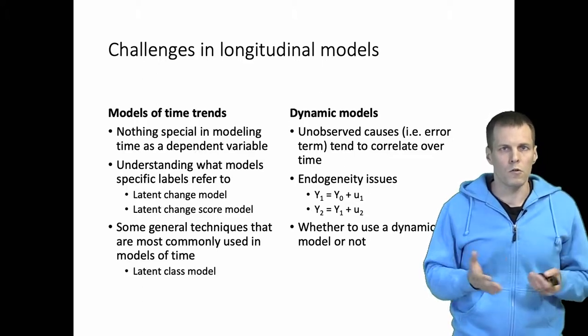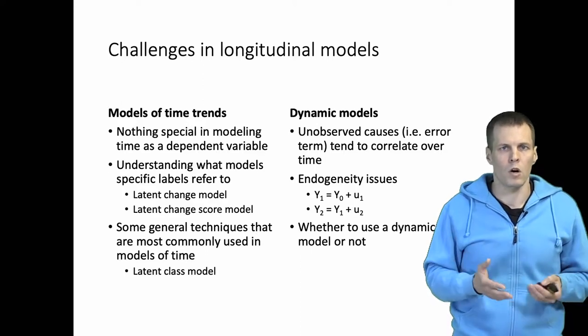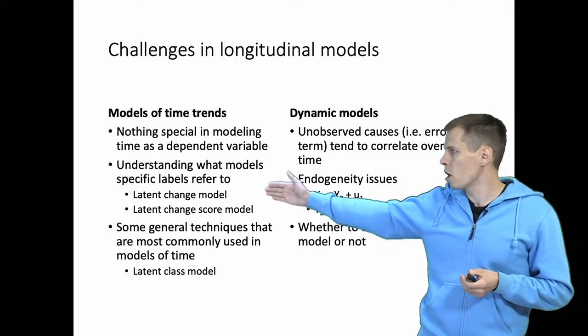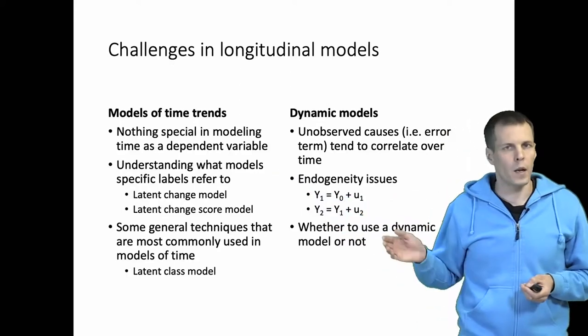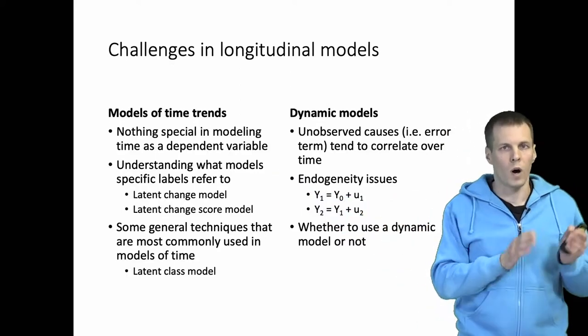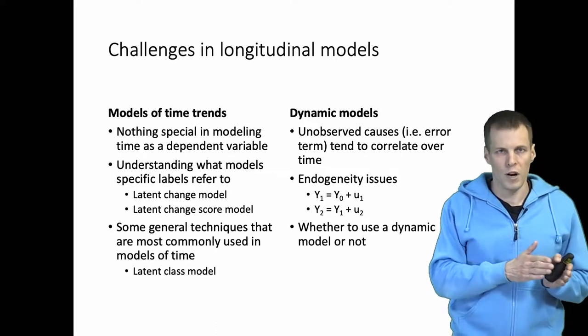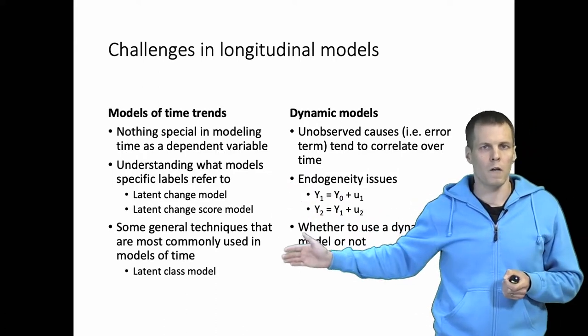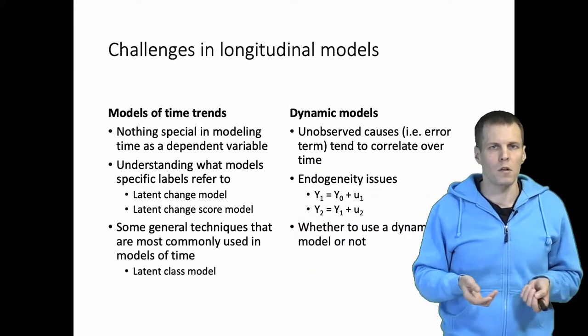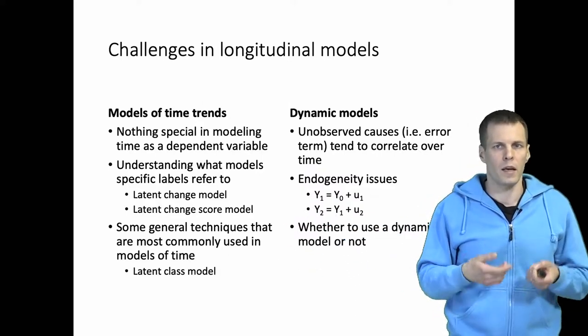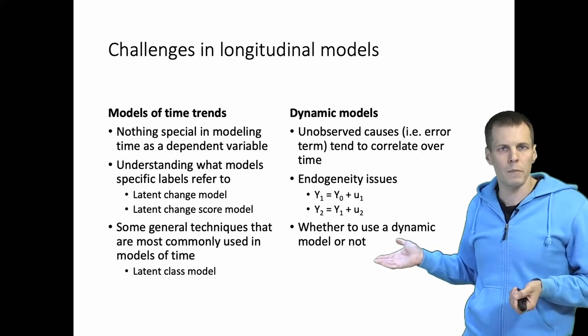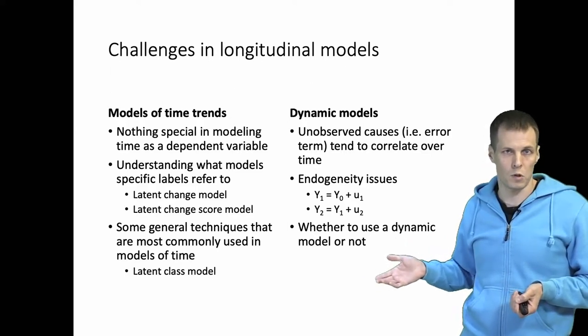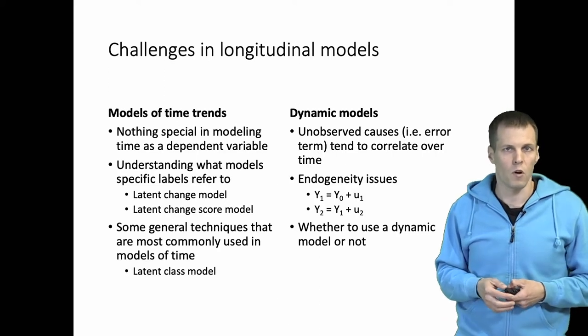So to summarize, longitudinal models can be categorized into two different classes. We have models of time trends, and then we have dynamic models where y variables explain or predict their future values. These models of time are fairly simple because time is nothing special; it's just a variable like any other. And these dynamic models lead to endogeneity issues and they are actually pretty tricky to understand.